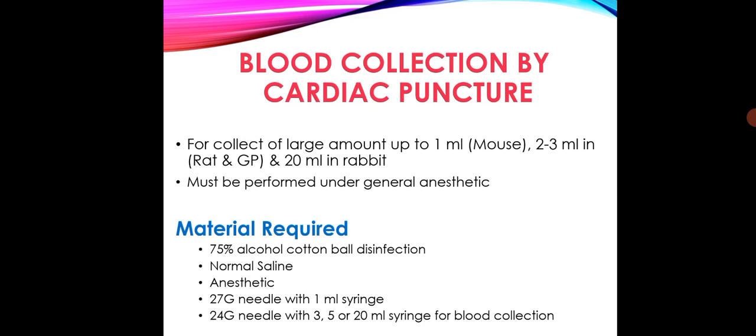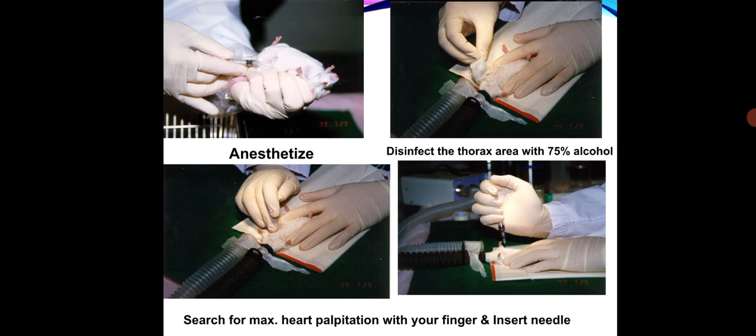Blood collection by cardiac puncture can collect large amounts — up to 1 ml in case of mouse, 2 to 3 ml in case of rat or guinea pig, and 20 ml in case of rabbit. It must be performed under general anesthesia. Materials required are: 75 percent alcohol cotton ball for disinfection, normal saline, anesthetic, 20 to 27 gauge needle with 1 ml syringe, and 24 gauge needle with 3, 5, or 20 ml syringe for blood collection. Anesthetize the animal, disinfect the thorax area with 75 percent alcohol, search for maximum heart palpitation with your finger, and insert the needle.